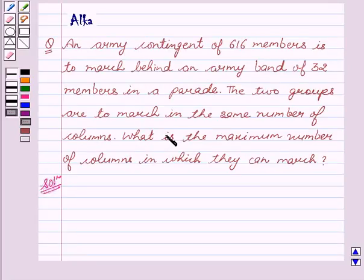Hello friends, welcome to the session. I am going to help you solve the problem that is an army contingent of 616 members is to march behind an army band of 32 members in a parade.